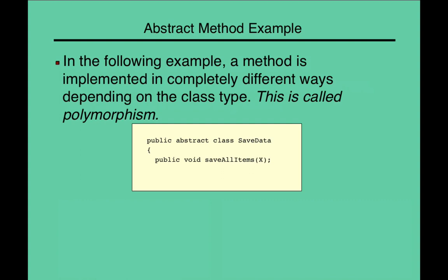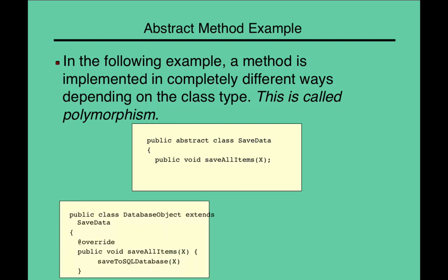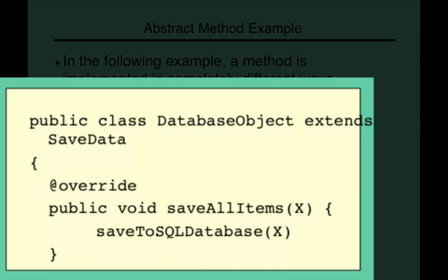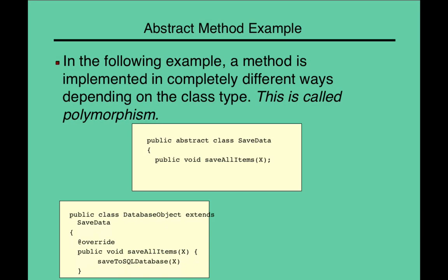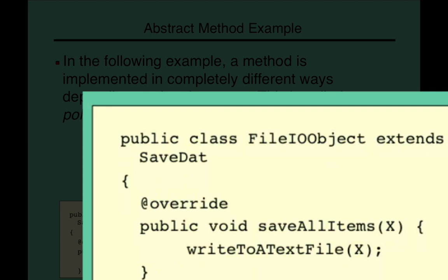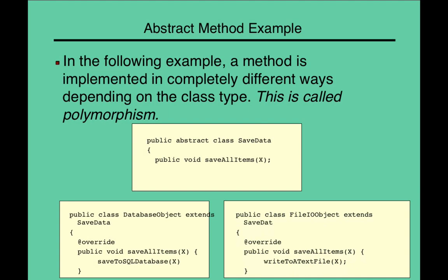Here's another example of something we'll see in this course. We'll have a method later called save data, or a class called save data. And inside of that class, we have a method that says save all items, and then x is a list of items that we're going to save. In one way, we could implement save all data as a database object. And the method called save all items would write that information to a SQL database. However, we might have a different class called file IO object. That also extends save data. And his interpretation of save all items is write everything to a text file. And so, both of them implement save all items, but in drastically different ways.